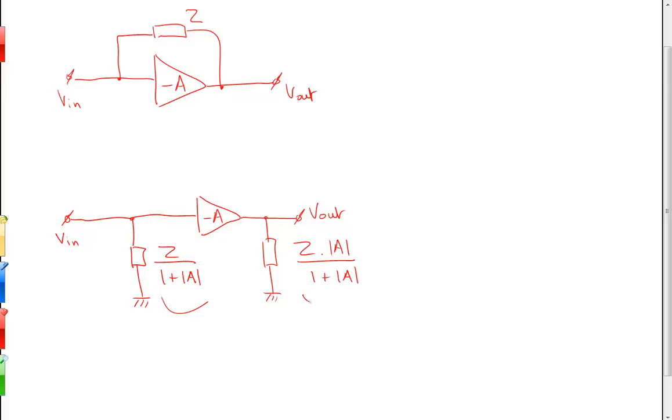The output impedance is actually very close to Z when the open loop gain is high. So how can we prove this theorem and understand how it works? Let's focus on the input impedance, because the equivalent output impedance can be proven in the same way.